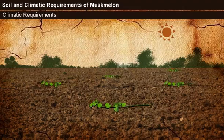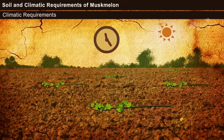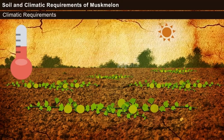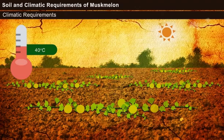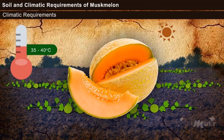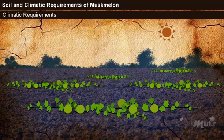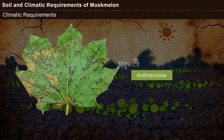Climatic Requirements. Generally, muskmelon is a warm-season crop suitable to be grown in tropical and subtropical regions. It grows well when the days are long with abundant sunshine. The average atmospheric temperature suitable for normal growth is 30 to 35 degrees Celsius. However, it can withstand temperatures as high as 40 degrees Celsius and as low as 20 degrees Celsius. 35 to 40 degrees Celsius is required during fruit development. The optimum soil temperature required for quick germination, early maturity and fruit production ranges from 18 to 25 degrees Celsius. Excess humidity encourages pests like fruit fly and leads to diseases like downy mildew, powdery mildew and anthracnose.